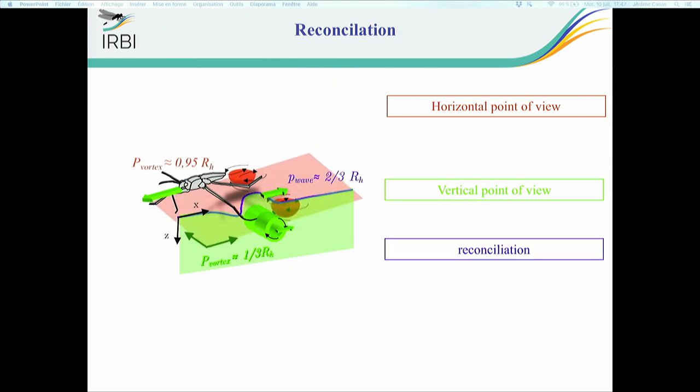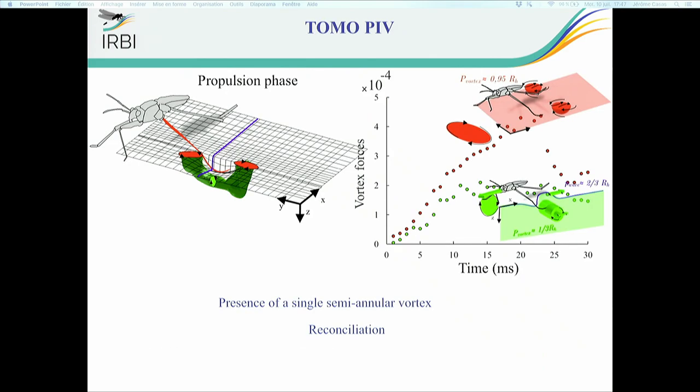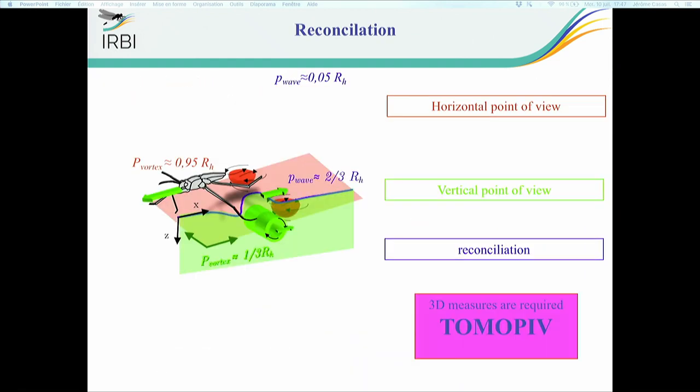Still does not give us the answer to the relative importance of the forces. Do you have an idea of the order of the magnitude of the forces? 10 to minus 4. This did require thermal PIV because you need to see the same object at the same time through different point of view.